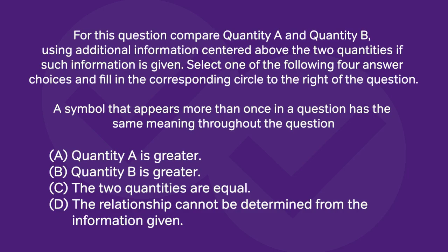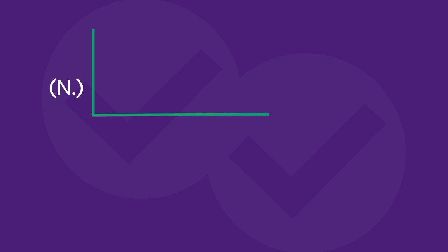In this question, we have these bars here. We have this y-axis here — y-axis represents frequency, the number of times a certain score pops up. The score could be 1, 2, 3, 4, 5, or 6, and we have these bars corresponding to that frequency. This bar over here is 2, this bar over here is 4, meaning there are 4 number 2s, and there are 7 number 3s, and 10 number 4s.